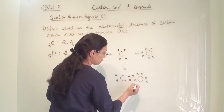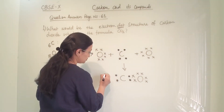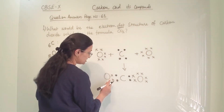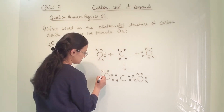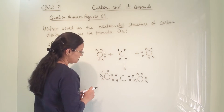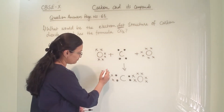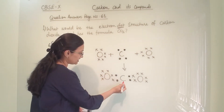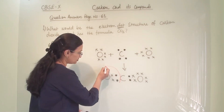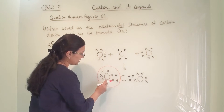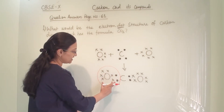The remaining 6 electrons of each oxygen are also shown. Oxygen is sharing 2 electrons and keeping the rest. If we count oxygen's octet: 1, 2, 3, 4, 5, 6, 7, 8 — oxygen's octet is completed.